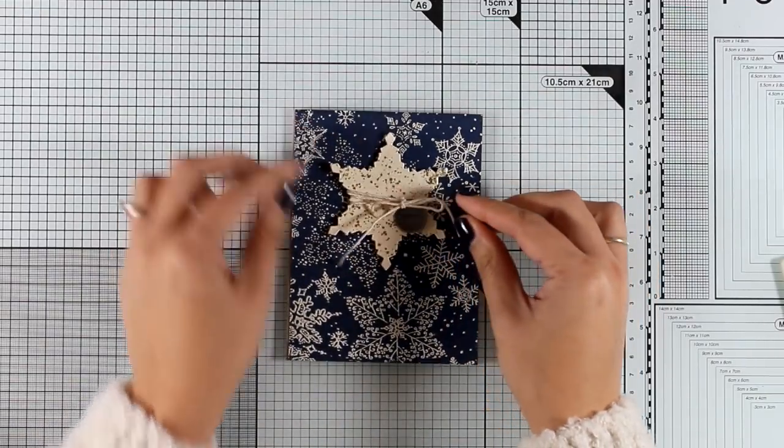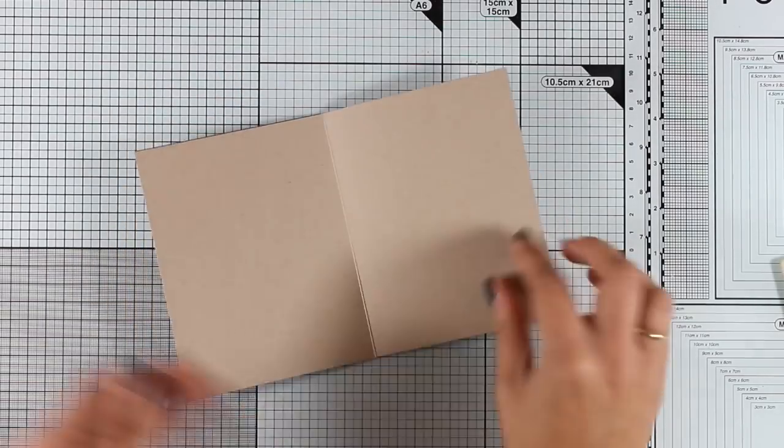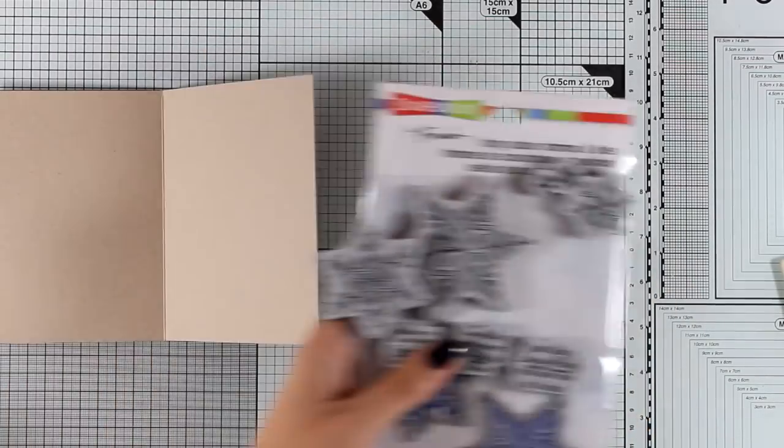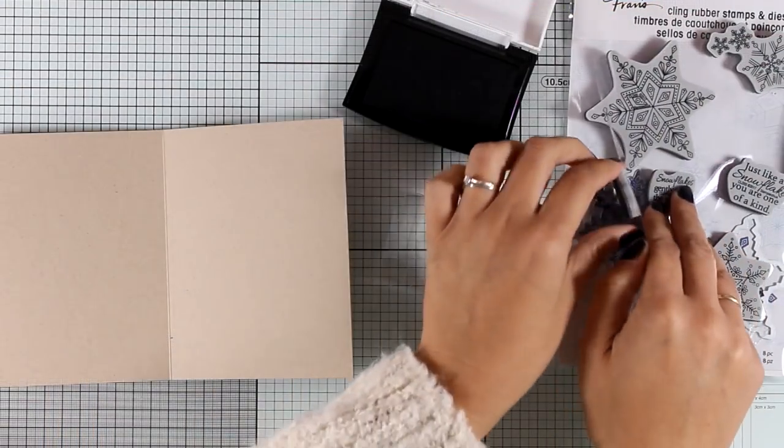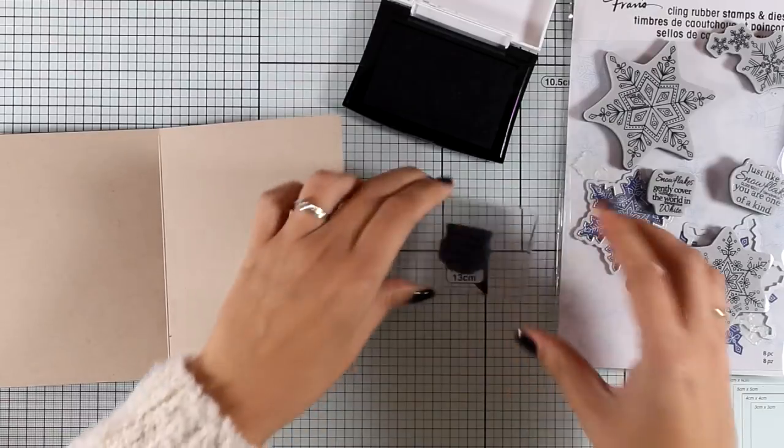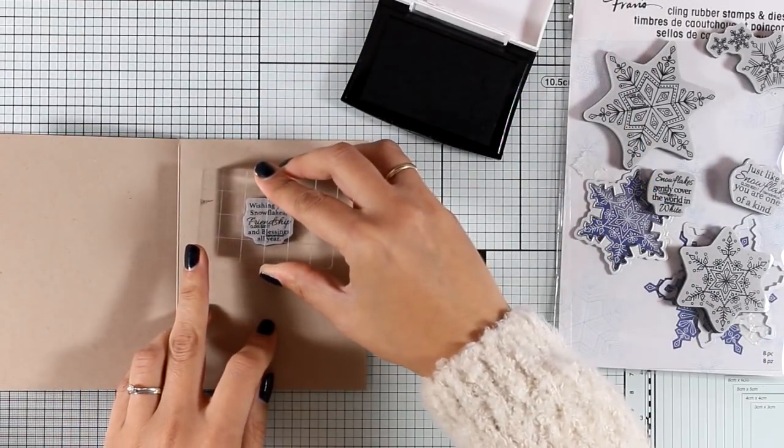And I really love how it looks. The little token at the front of my card has the word peace, but since I don't have a peace sentiment, I decided to stamp one on the inside of my card, so I went with the one that says wishing you snowflakes, friendship, and blessings all year.